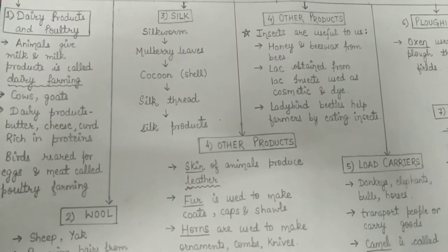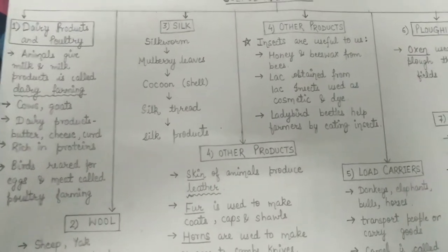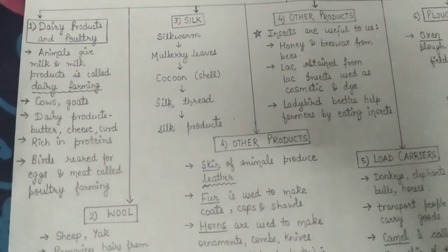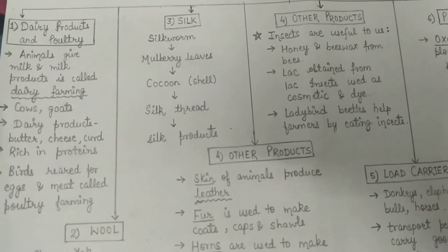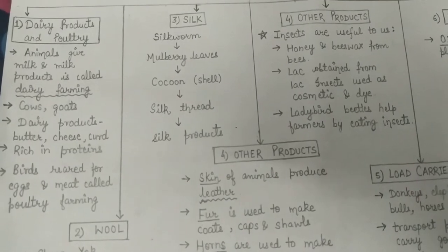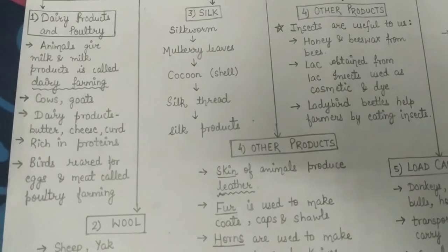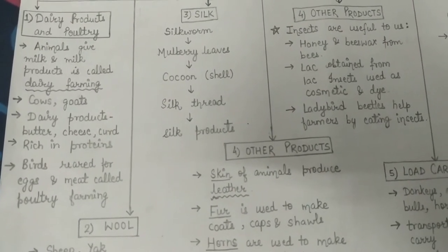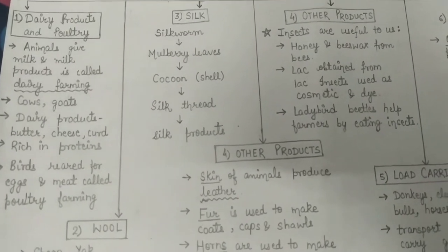Examples of dairy animals include cows, goats, and buffaloes. If I ask you to name some dairy products, you can give examples like butter, cheese, and curd. They are called dairy products because we get them from milk. These products are rich in proteins, which help in the growth and development of children.